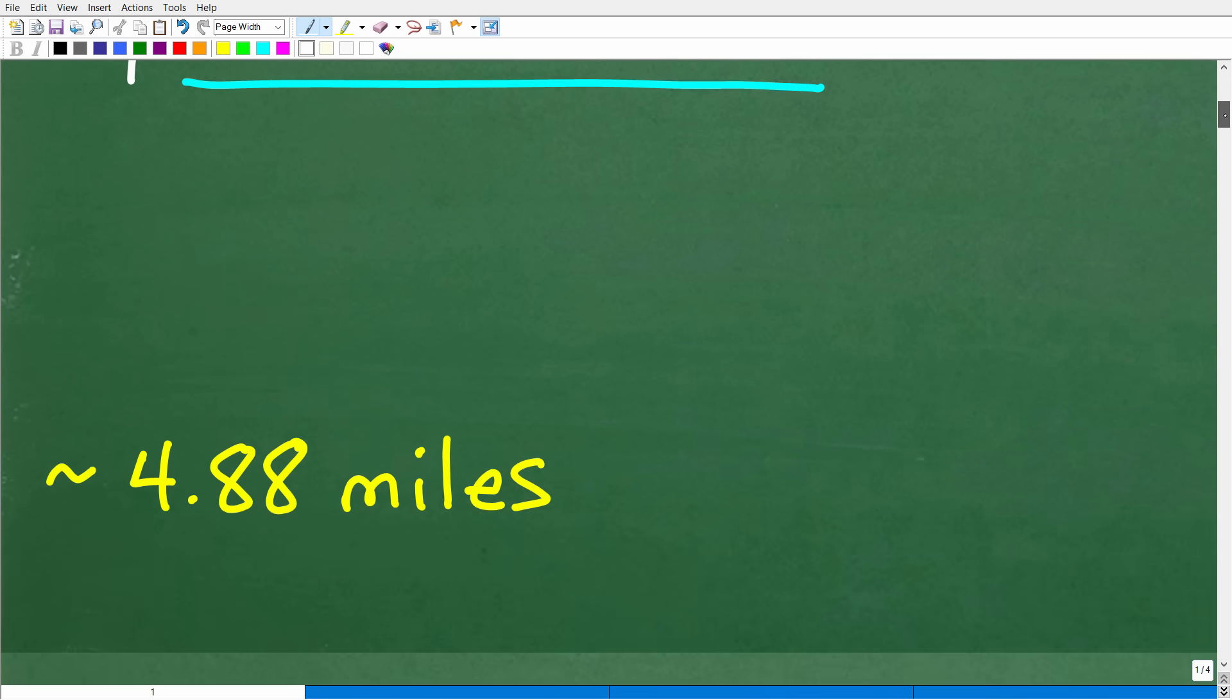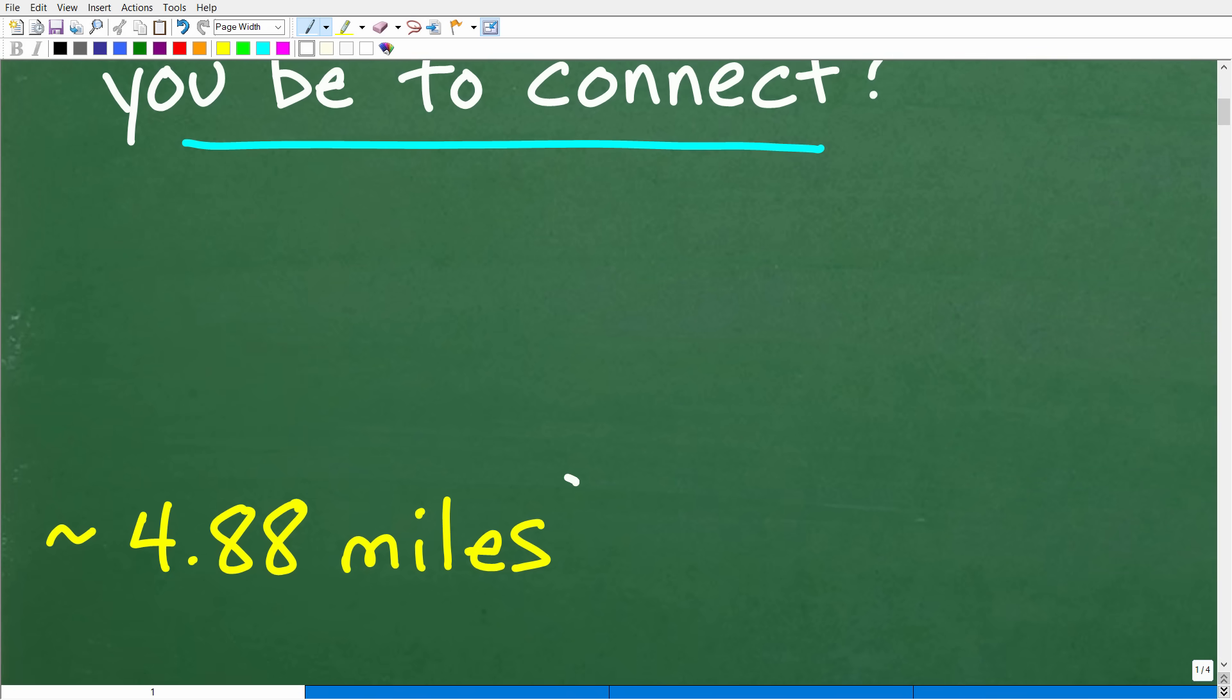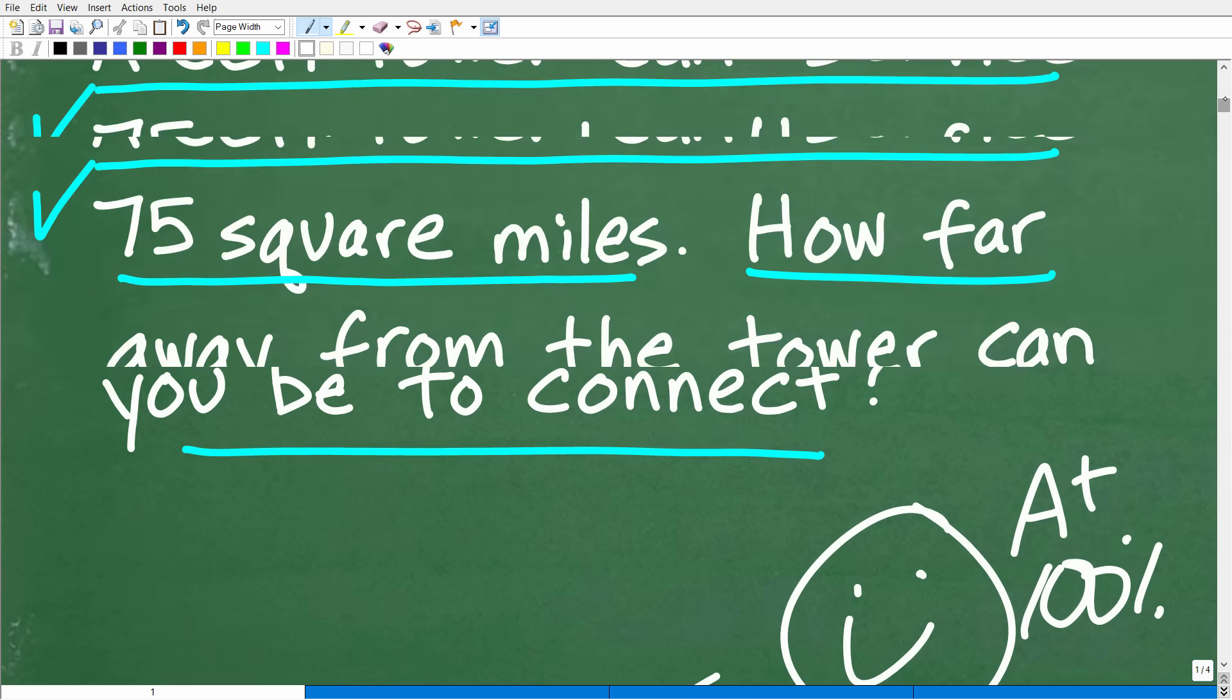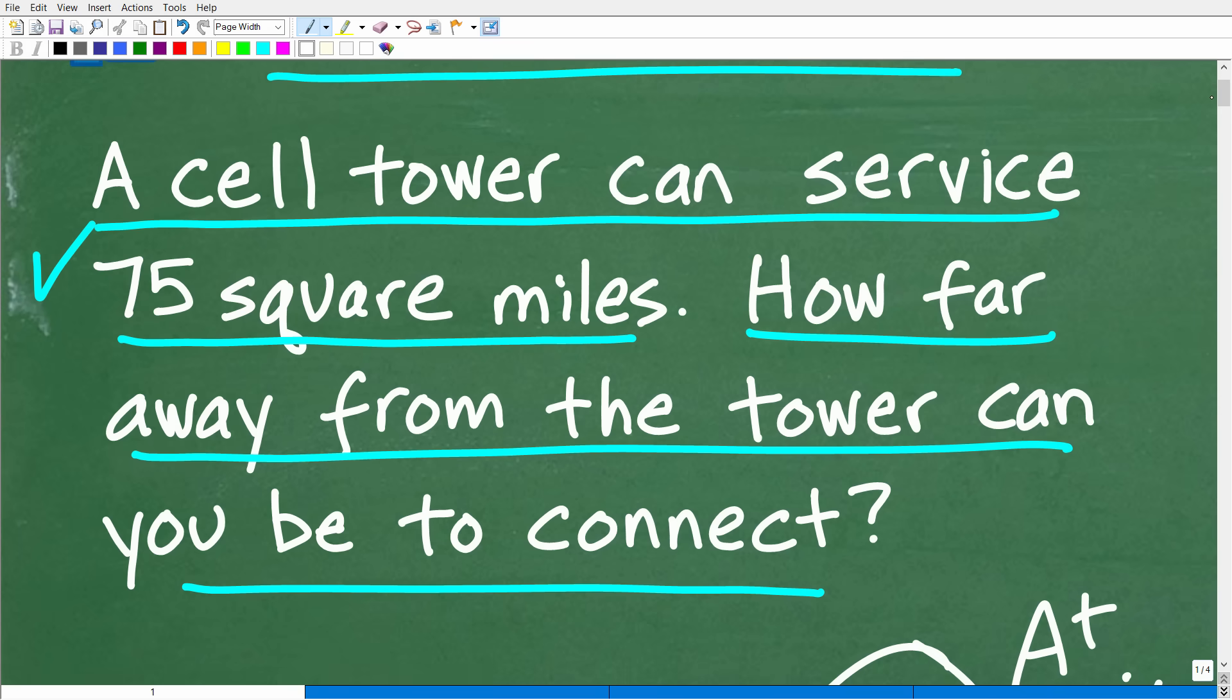But let's go and take a look at the answer. The correct answer is approximately 4.88 miles. All right. Now, if you got this answer, well, you have to celebrate by giving you a nice little happy face and a plus 100% and multiple stars. So you can brag to your friends and family that indeed you are an expert in figuring out interesting little math word problems.